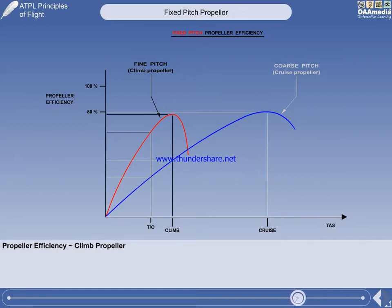For optimum efficiency across the required speed range, a propeller whose blade angle can be varied in flight is required: fine-pitch for take-off and climb, and coarse-pitch for cruising.